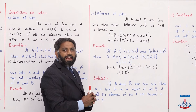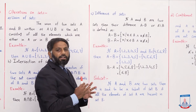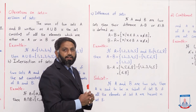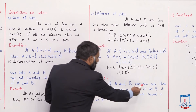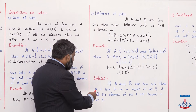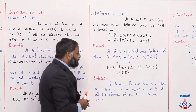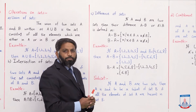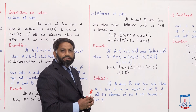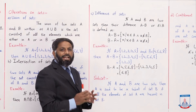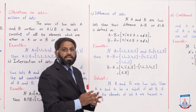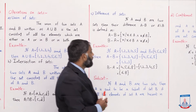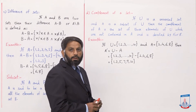اب next operation ہے: complement of a set۔ Complement of a set سمجھنے کے لیے subset کا سمجھنا ضروری ہے۔ If A and B are two sets, then A is said to be a subset of set B if all the elements of set A are present in set B۔ Set A، set B کا subset تب کہلائے گا جب set A کے تمام elements set B میں موجود ہوں۔